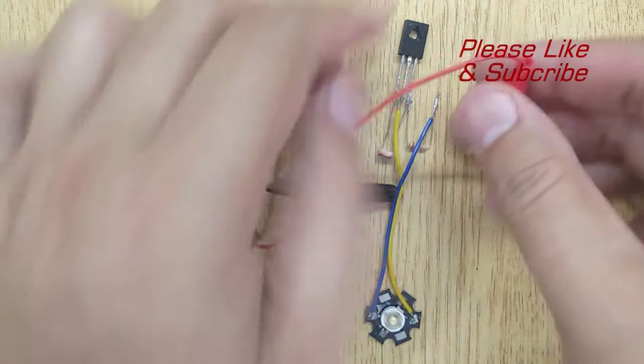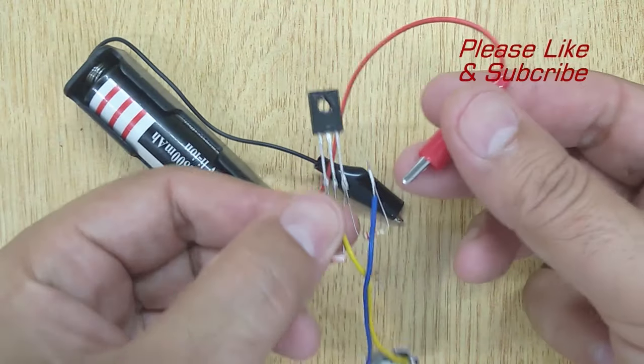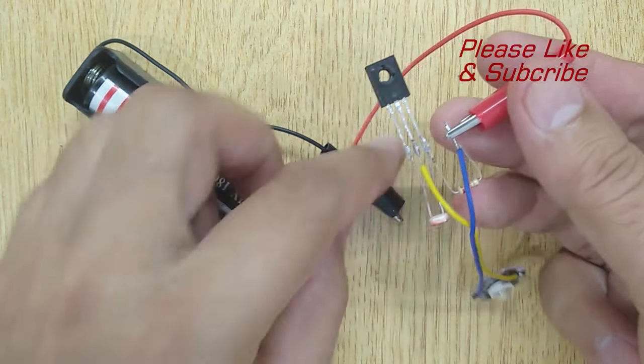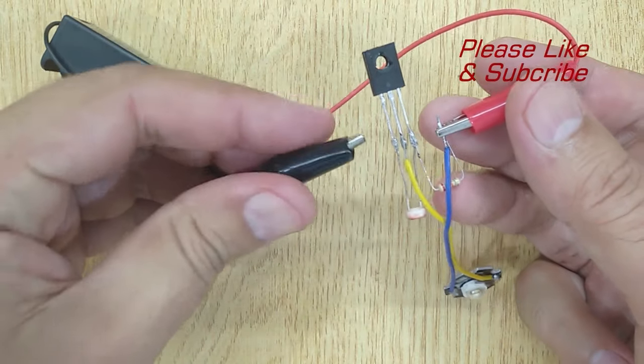Connect the positive terminal of the battery with the resistor and the negative terminal of battery with the emitter of the transistor.